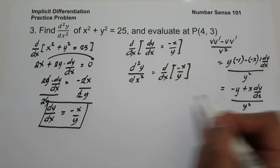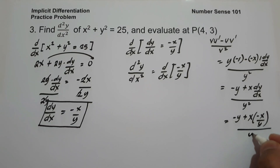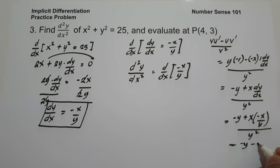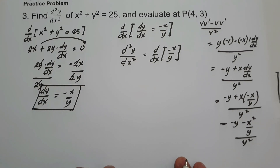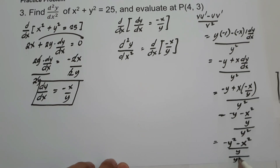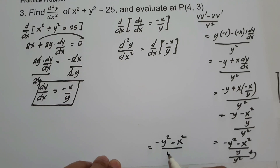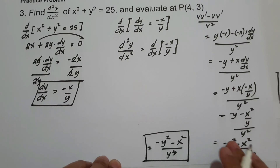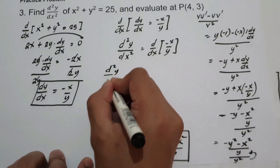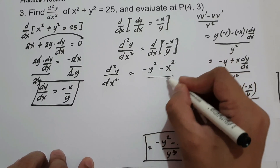We have the value of dy over dx, which is negative x over y. So substituting: negative y plus x times negative x over y, all over y squared. That is negative y minus x squared over y, all over y squared. Simplifying by multiplying: negative y squared minus x squared over y, divided by y squared, gives negative y squared minus x squared over y cubed.